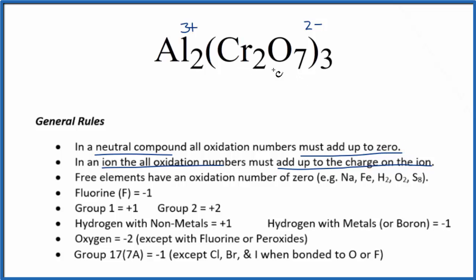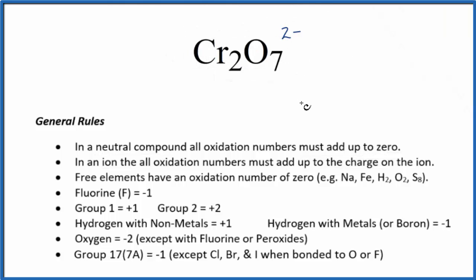If we want to find the oxidation number on the chromium here in the dichromate ion, let's just look exclusively at the dichromate ion. We said the dichromate ion has a 2- ionic charge. So all the oxidation numbers here add up to 2-. We can just set up an equation. All of these oxidation numbers will equal this minus 2.